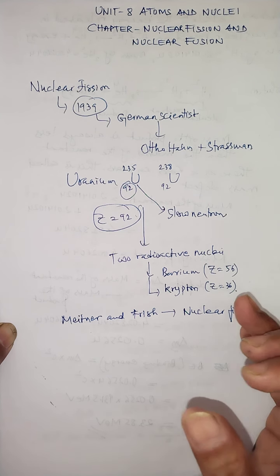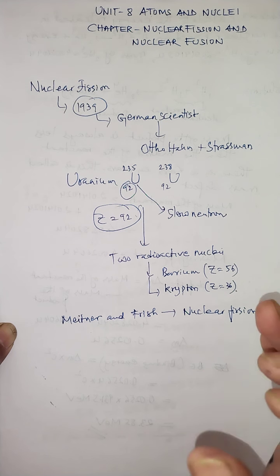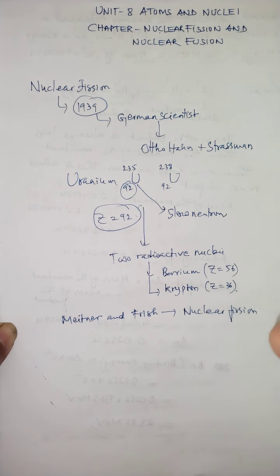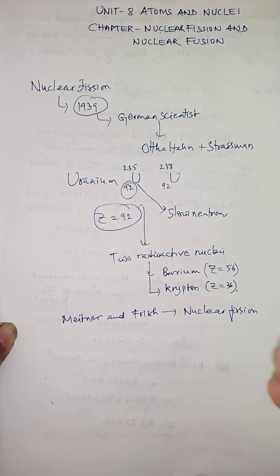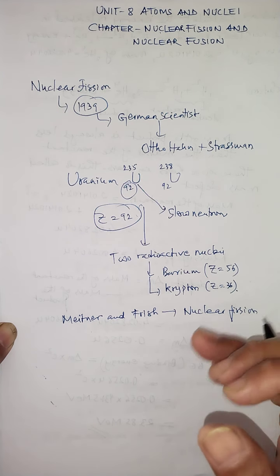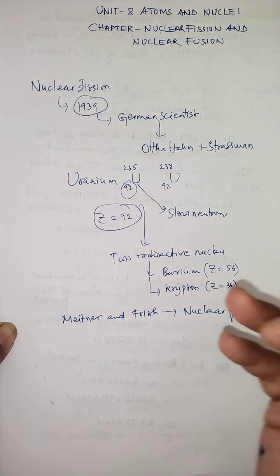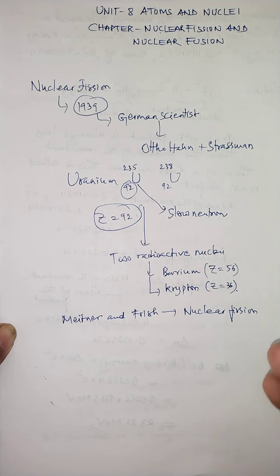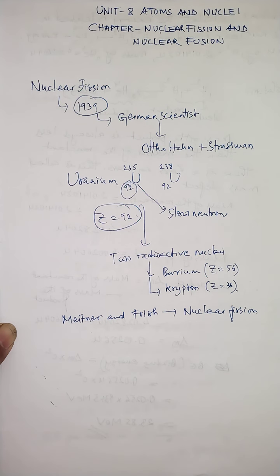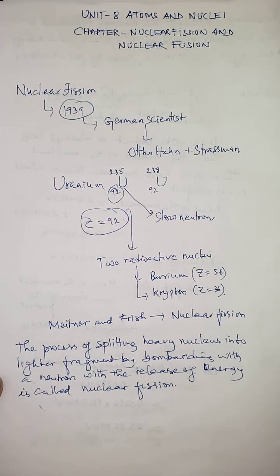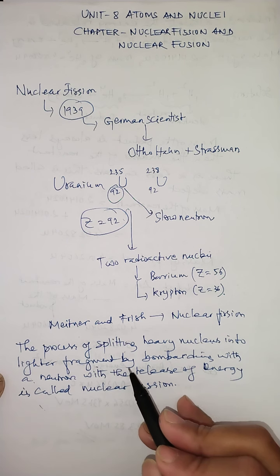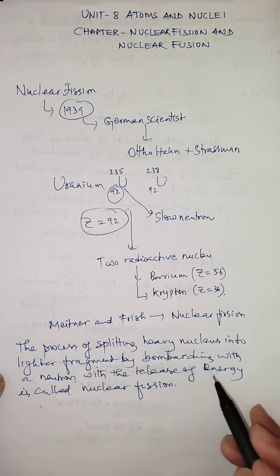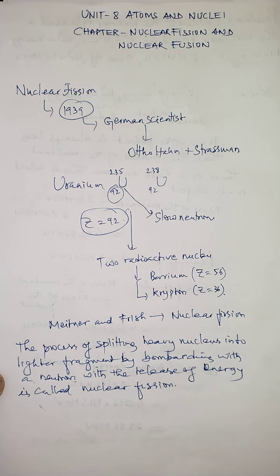Based on this observation, we can now define nuclear fission as a phenomenon or process in which a heavy nucleus, after capturing or being bombarded by a neutron, splits into two or more lighter nuclei of comparable masses. Along with these lighter nuclei, a huge amount of energy is released. This process is known as the nuclear fission reaction.